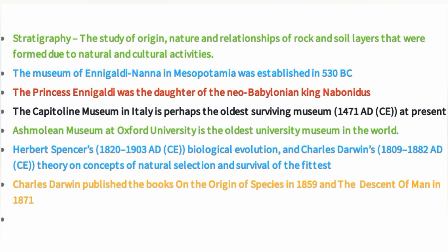The Capitoline museum in Italy is perhaps the oldest surviving museum at present. The oldest surviving museum currently in existence is the Capitoline museum, located in Italy.